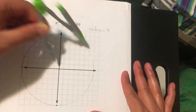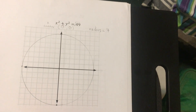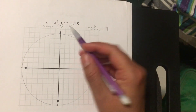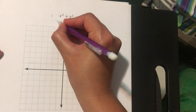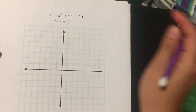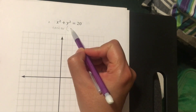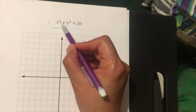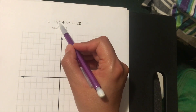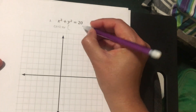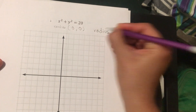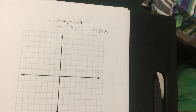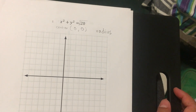Let's do exercise number two. Again, you're not adding or subtracting inside parentheses, so the center is at (0, 0). Some people want to use the coefficient as part of the center, but no — it only matters if you're adding or subtracting something inside parentheses. For the radius, take the square root of 20. Since 20 is not a perfect square, you'll need a scientific calculator.